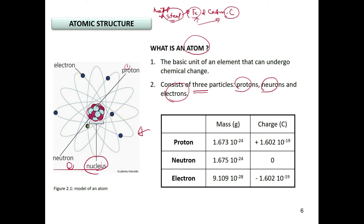The electron moves surrounding the nucleus in what we call the electron cloud. Protons, neutrons, and electrons have their own masses. Both protons and neutrons have similar masses, whereas the electron is far lighter compared to neutrons and protons. The proton carries a positive charge, the electron carries a negative charge, and the neutron is neutral. By being neutral, the neutron is the reason why the electron is not simply attracted directly to the proton.